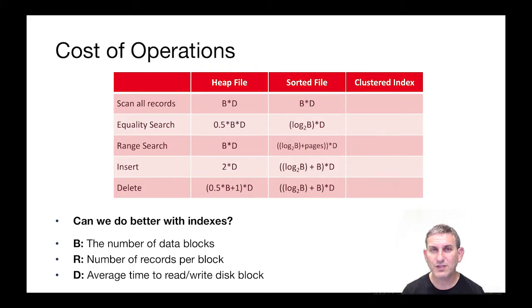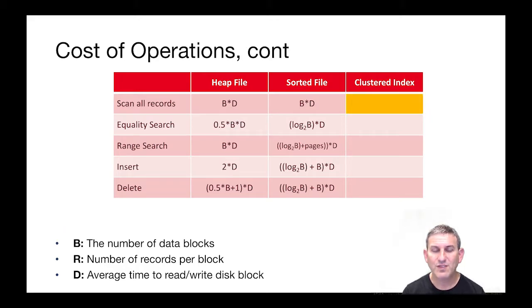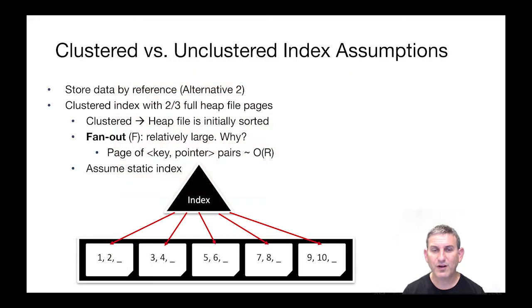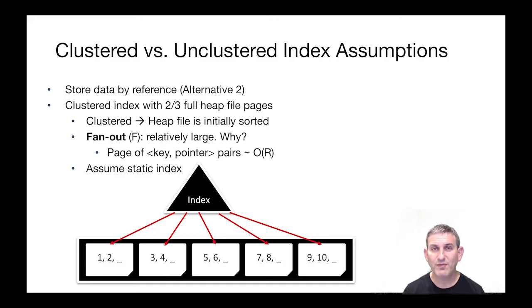We'll look at a clustered index, which is going to give us the best performance — so this will be an optimistic assessment. The fan out of the B+ tree is going to be large, F, because we've got big pages and at the leaf level it's key-pointer pairs, not full tuples. Data is stored by reference, alternative two. Because it's a clustered index, we'll assume the heap file is two thirds full to account for future insertions.